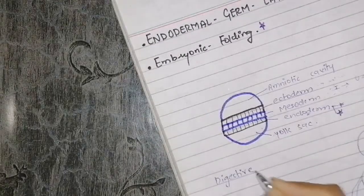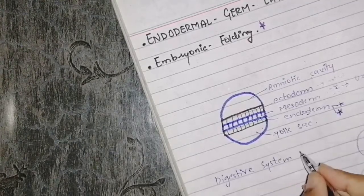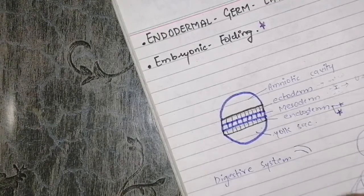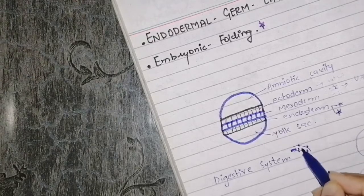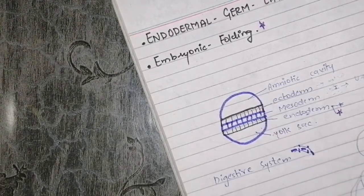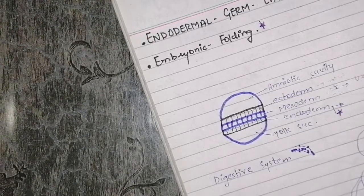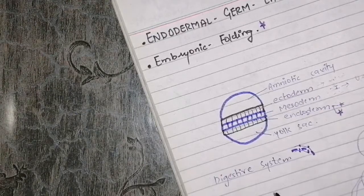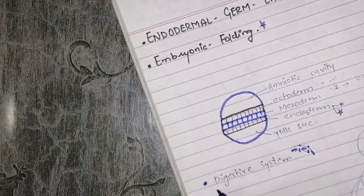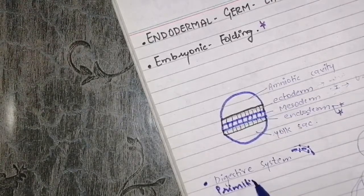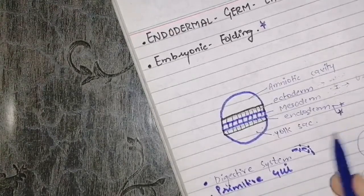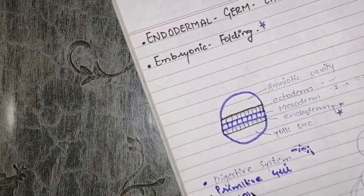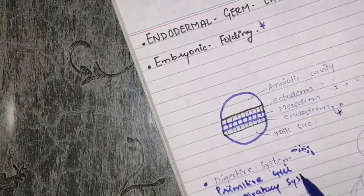First, the digestive system — when it is created, we call it the primitive gut. The primitive gut is divided into 3 parts: foregut, midgut, and hindgut. There are different organs that develop in the digestive tract. So the digestive system, or more precisely the primitive gut, is derived from the endoderm.